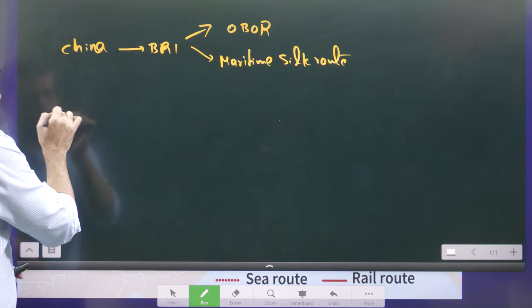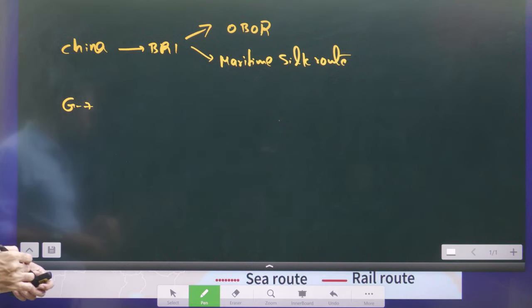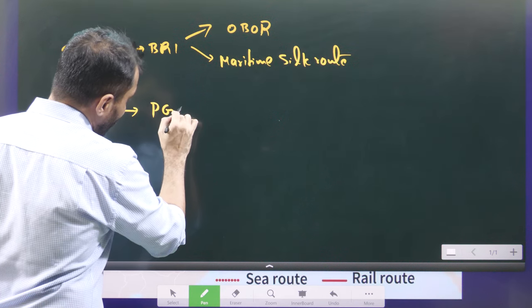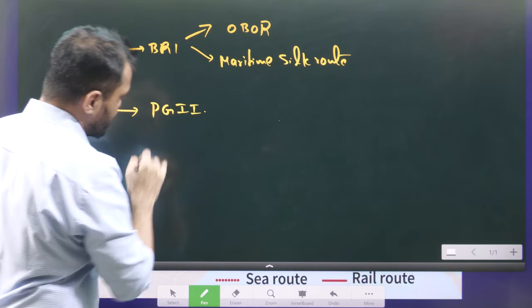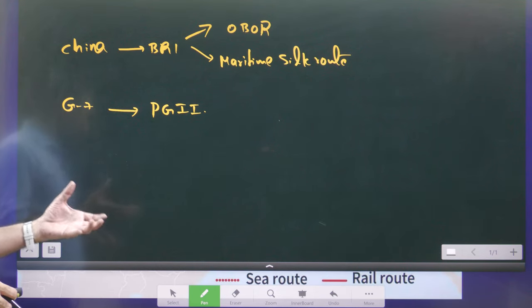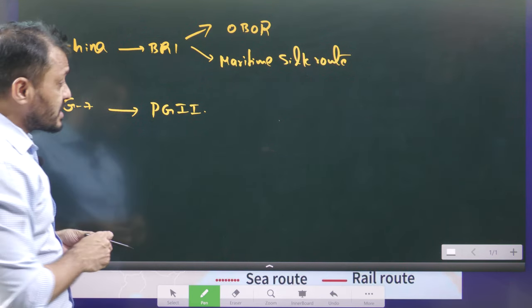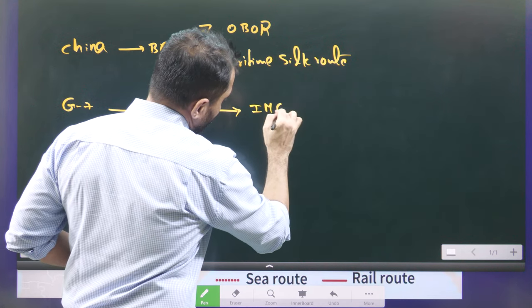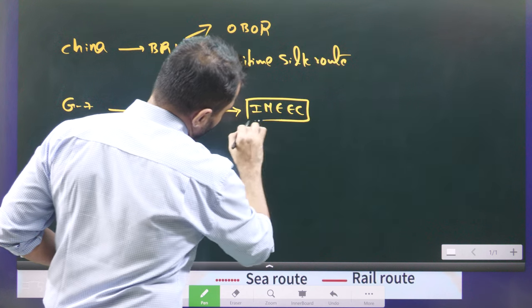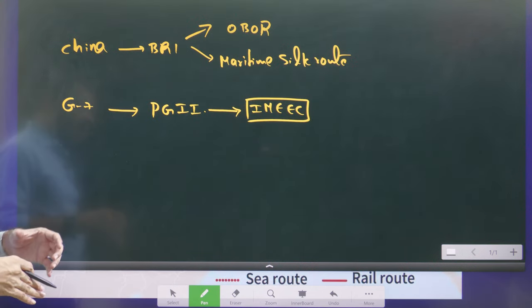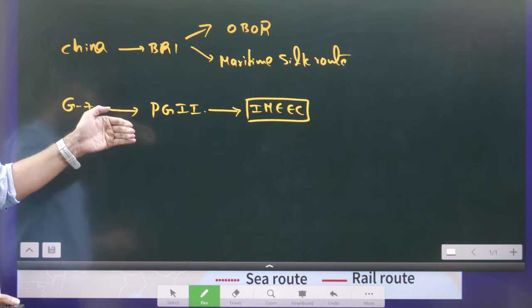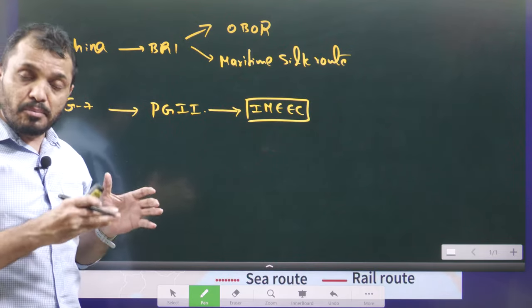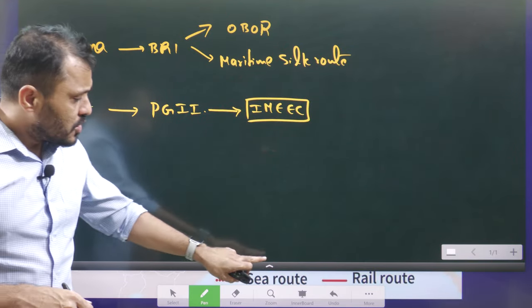In competition to this, Europe and USA — mainly G7 countries — came up with a plan known as Partnership for Global Infrastructure and Investment (PGII). As a part of this, the India Middle East Europe Economic Corridor was conceived. This particular corridor can be seen as a component of G7 efforts towards countering China's growing dominance on both land as well as maritime water.